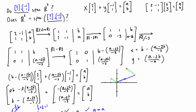A situation where vectors would not span R2 is if the two vectors were parallel to each other. If you tried to find all linear combinations, the span would just be a straight line parallel to those two vectors. There would be no combination of the two parallel vectors that could reach an off-line point — so you'd say no, those two vectors do not span R2.